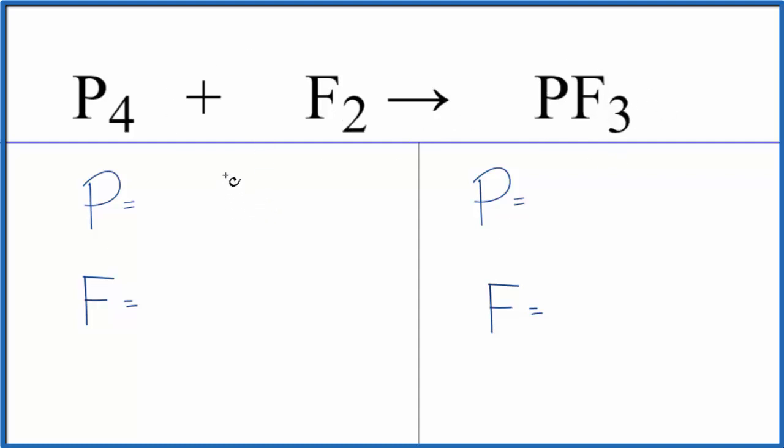So let's first write the number of atoms on each side of the equation. Four phosphorus atoms, two fluorine atoms. On the product side, one phosphorus and three fluorine atoms.